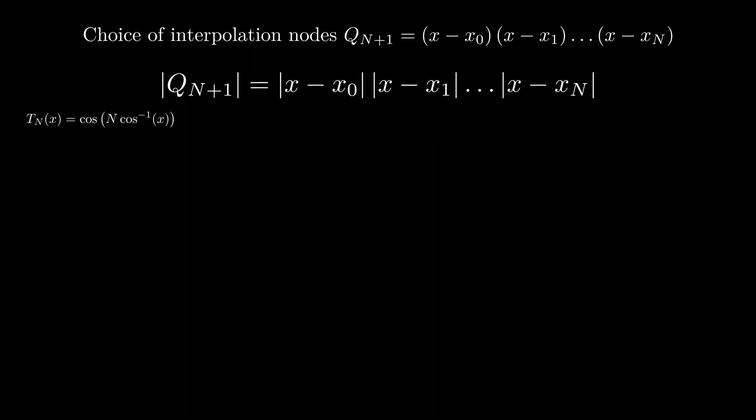What? This doesn't look like a polynomial. But we see that t sub 0 of x is 1, and t sub 1 of x is x, and it is a trivial and fun exercise to derive the Rodriguez recursion relation using the multiple angle formulas.